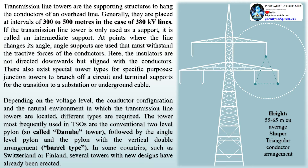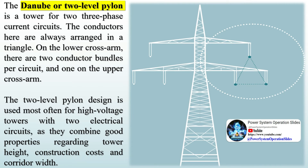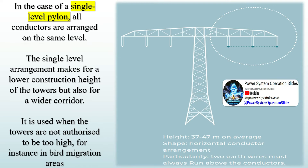Transmission line towers are the supporting structures used to hang the conductors of an overhead line. Generally, they are placed at intervals of 300 to 500 meters in the case of 380 kV lines. If the transmission line tower is only used as a support, it is called an intermediate support. At points where the line changes its angle, angle supports are used that must withstand the tractive forces of the conductors. There also exist special tower types for specific purposes: junction towers to branch off a circuit and terminal supports for the transition to a substation or underground cable. Depending on the voltage level, conductor configuration, and the natural environment, different types are required. The tower most frequently used by TSOs is the conventional two-level pylon, the so-called Danube tower, followed by the single-level pylon and the pylon with vertical double arrangement, the barrel type.